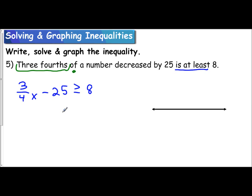To solve then, I am going to add 25 to both sides to get three fourths x is greater than or equal to. 25 and 8 is 33. And then I'm going to multiply by the reciprocal.